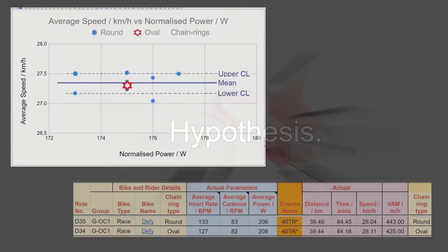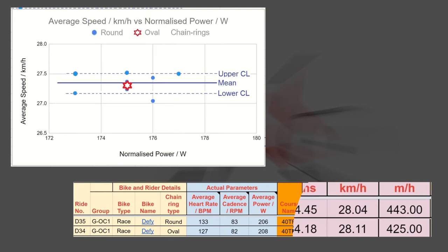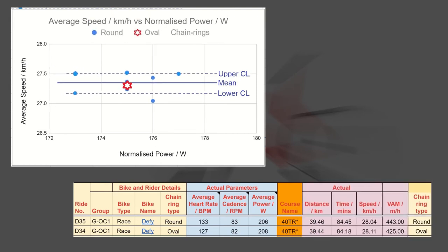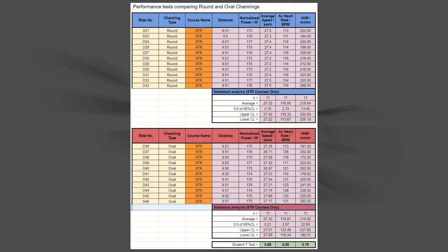I've also included the upper and lower 95% confidence limits. At this stage, it's useful to create a hypothesis. In my previous video, the limited data presented suggested there was no speed benefit of using oval chainrings over round ones. So I'm going to use these observations to create the null hypothesis. We can now use the data and statistics to work out whether this hypothesis is not true. But first, let's just look at the raw numbers.